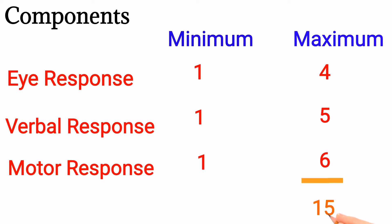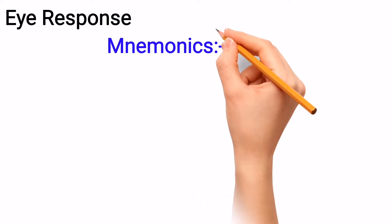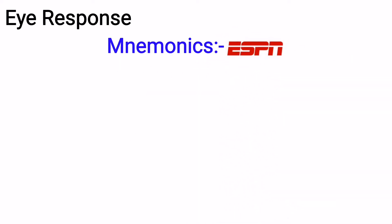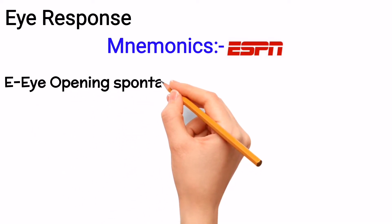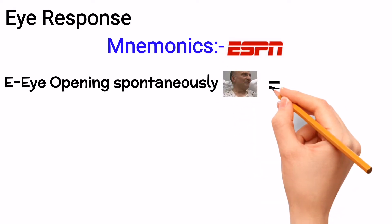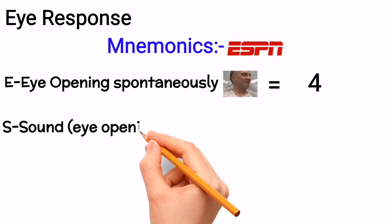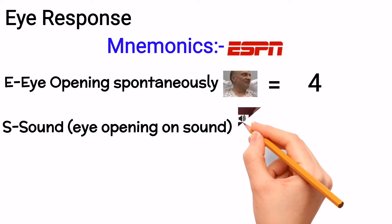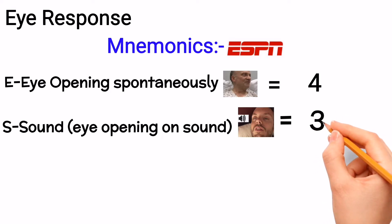So the maximum GCS is 15 while minimum GCS is 3. The Eye response mnemonic is ESPN — imagine you are watching ESPN, a sports channel, with your eyes. E in ESPN is for eye opening Spontaneously: you look at the patient and his eyes are open, then the GCS will be 4. S in ESPN is for Sound: you call or ask the patient to open his or her eyes, then the score will be 3.